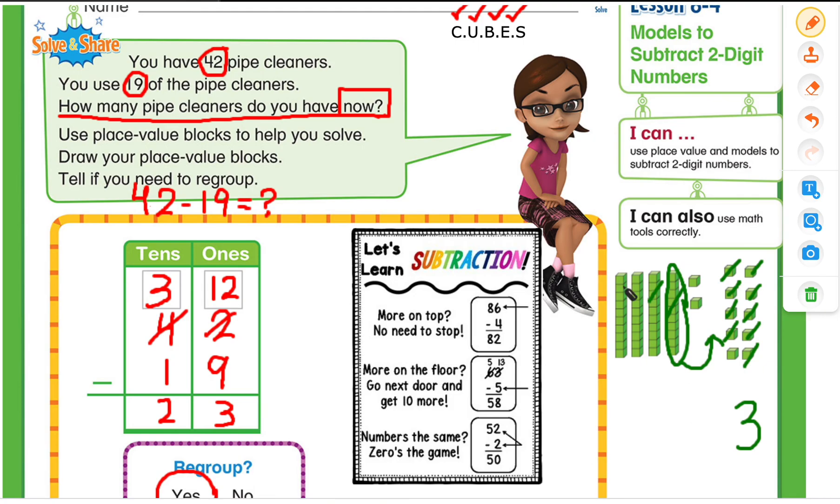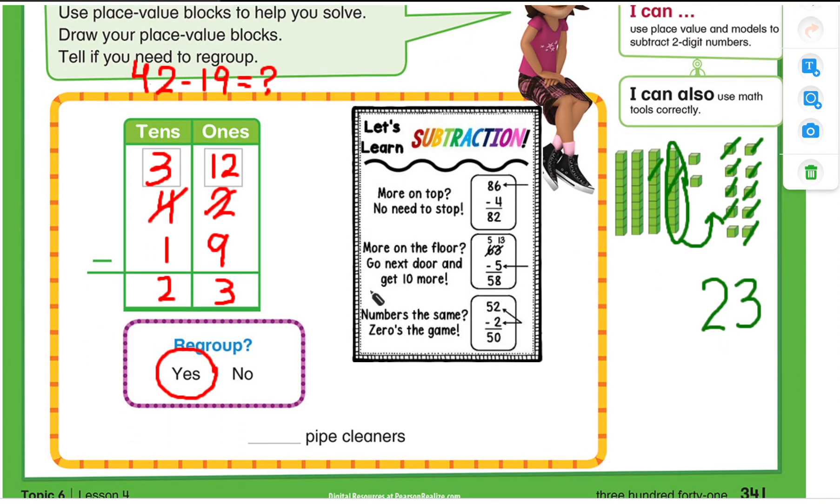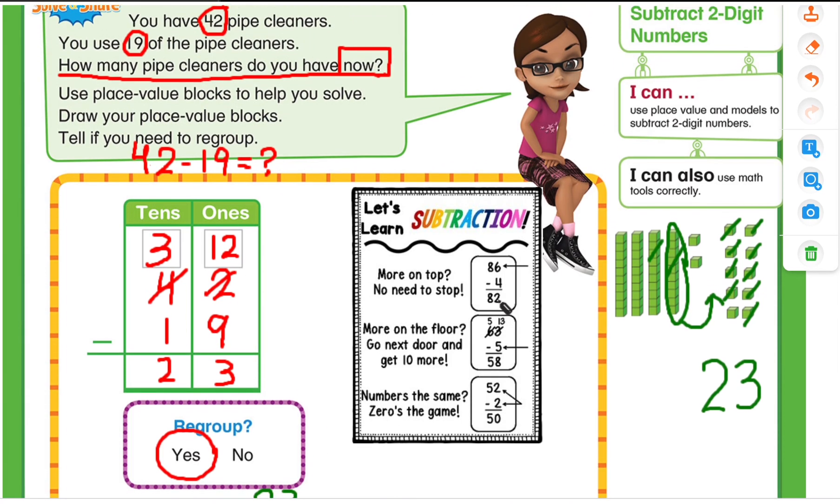1 and 2. So you can see that even by using the models and by using the place value, we got the same answer, which is 23 pipe cleaners.